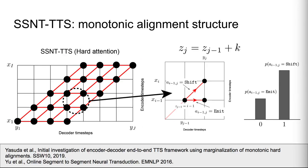Because of the monotonic nature of speech, SSNT-TTS designs its alignment structure to be monotonic. We introduce a binary alignment transition variable to guarantee monotonic alignment. The alignment transition variable has two values: emit and shift. Emit means alignment keeps its current input position. Shift means alignment proceeds to the next input position. For more detail, please refer to the papers below.